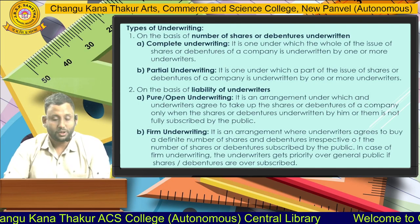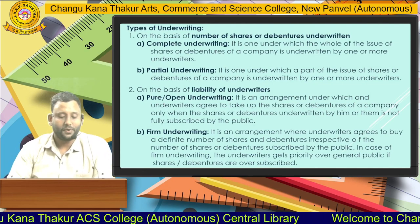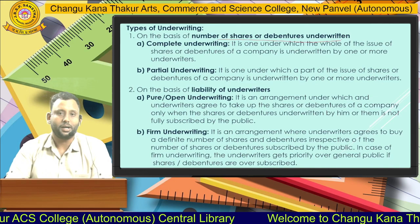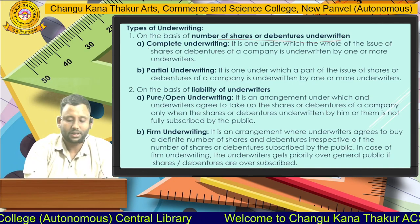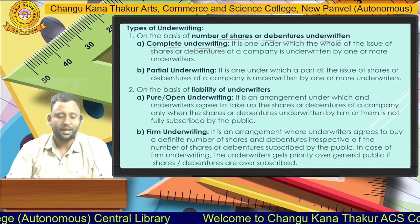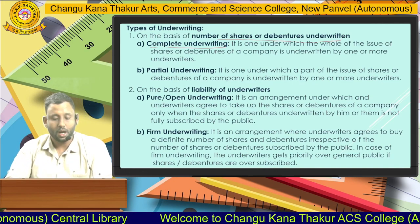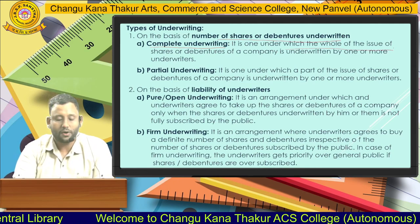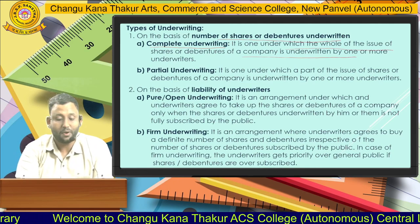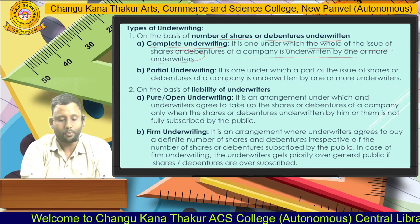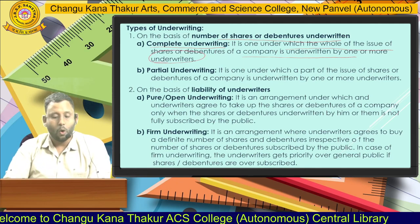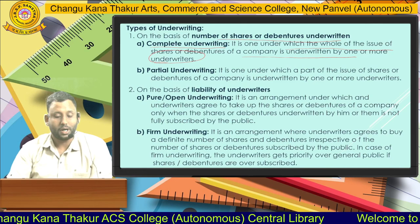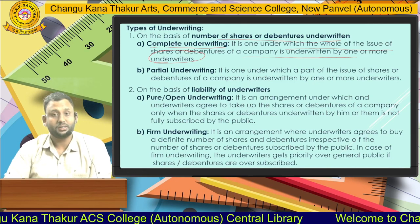There are various types of underwriting. First, on the basis of number of shares or debentures underwritten, there are two types: complete underwriting and partial underwriting. Complete underwriting is one under which the whole of the issue of shares and debentures is underwritten by one or more underwriters.